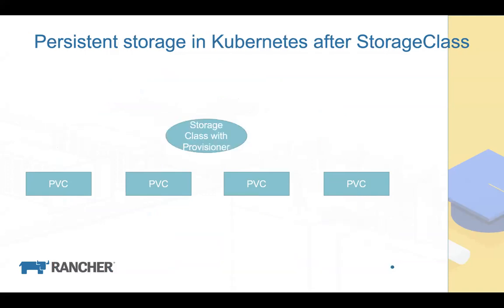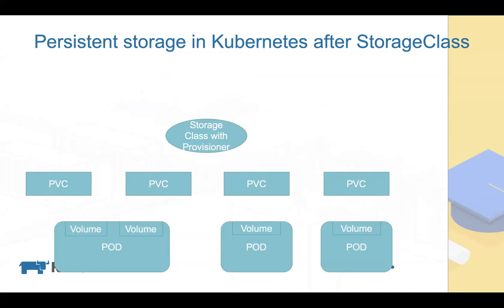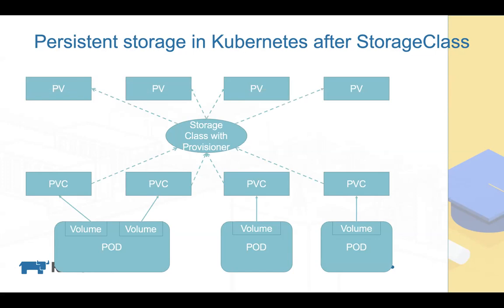When the Kubernetes community realized this problem, they introduced Storage Class and the provisioner. In the new model, the Storage Class with provisioner basically acts as the storage admin but does the work automatically. PVCs check if any existing PV can meet their requirements; if not, the PVC talks with the Storage Class and provisioner, which provisions new PVs according to the spec requested.